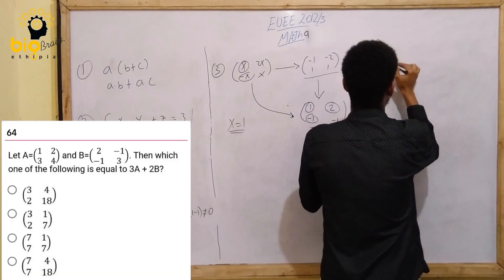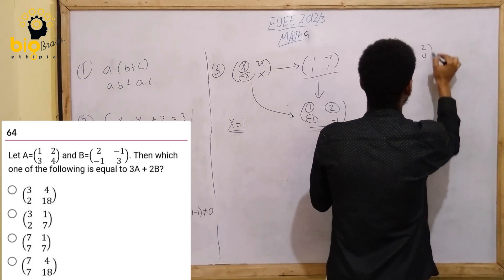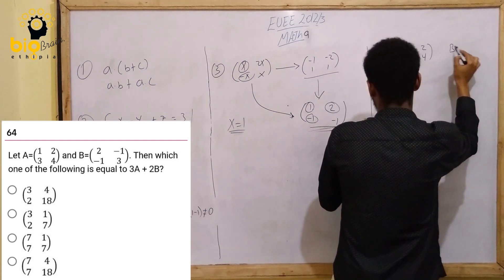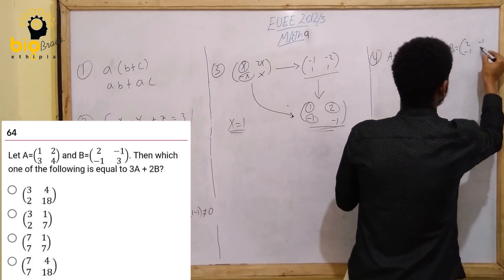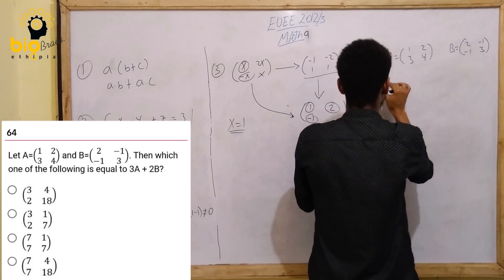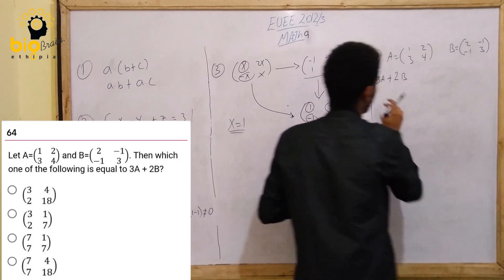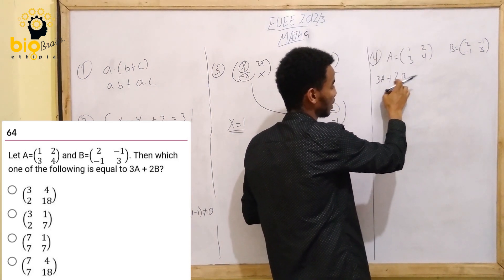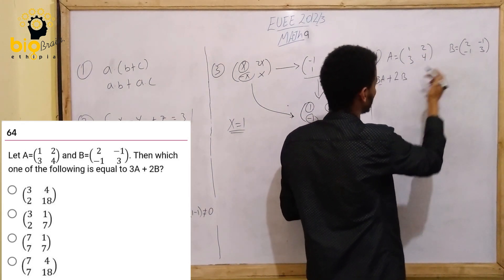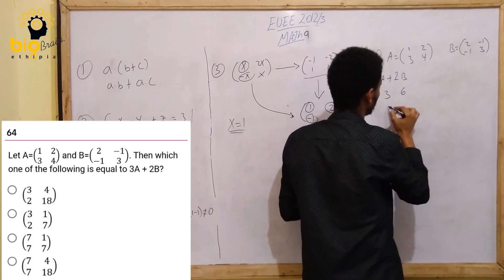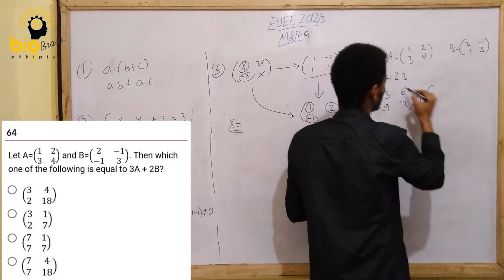Now A is the matrix [1 3; 2 4; 0] and B is the matrix [2 -1; -1 3]. We need to compute 3A plus 2B. So N equals 2A, and combining: S equals 2A plus S will equal 6A times K, with A minus 1 minus 1.